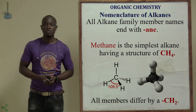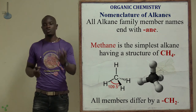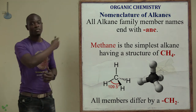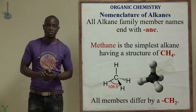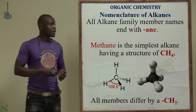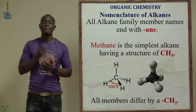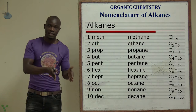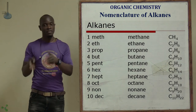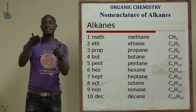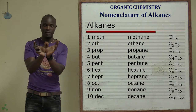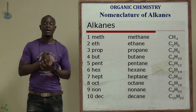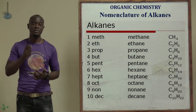Let's look at the nomenclature of alkanes — how to name them. The names of members of alkanes must end with '-ane'. For example, the first member is 'meth-', which is the name for carbon number one, and since it belongs to the alkanes family, we add '-ane' to get methane. Methane is the simplest member of the alkanes family with a chemical formula of CH4.